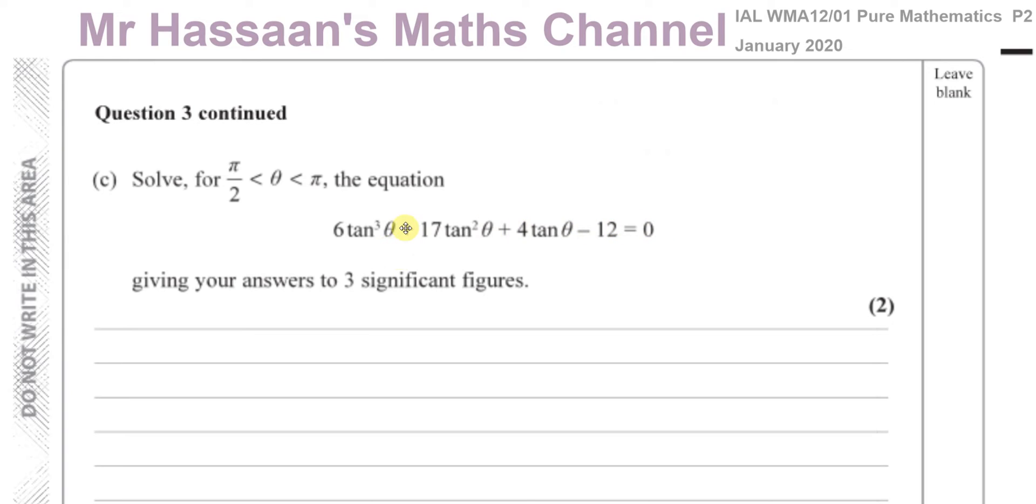Now when you have a question which is part C of another question and it looks totally unrelated, have a quick glimpse and see what the earlier part of the question was. I've got it over here. We had 6x cubed plus 17x squared plus 4x minus 12, and here we got 6 of something cubed plus 17 of something squared plus 4 of something minus 12. So this and this are practically the same thing. It's just that the x has become tan theta.